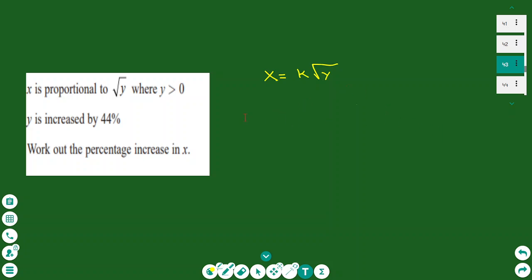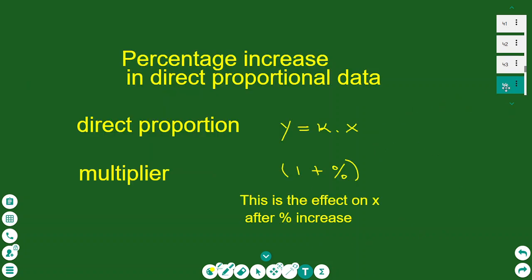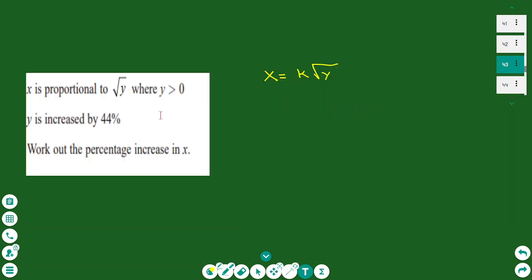The first thing to do is recognize this is directly proportional data. The equation that describes a direct proportion is y equals k times x. In this case, x is proportional to the square root of y.